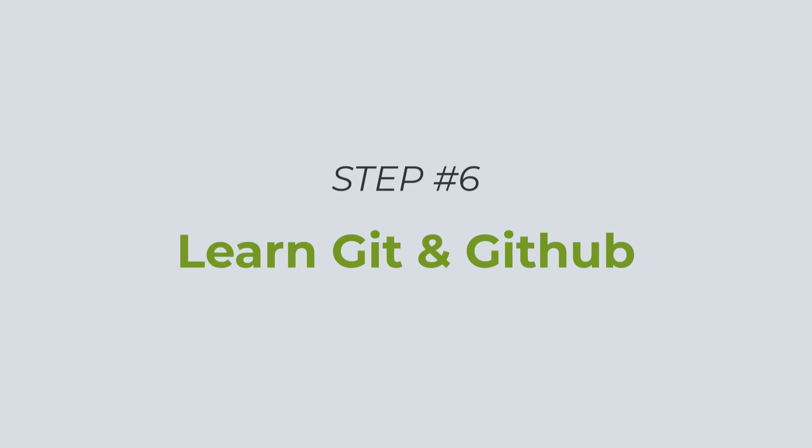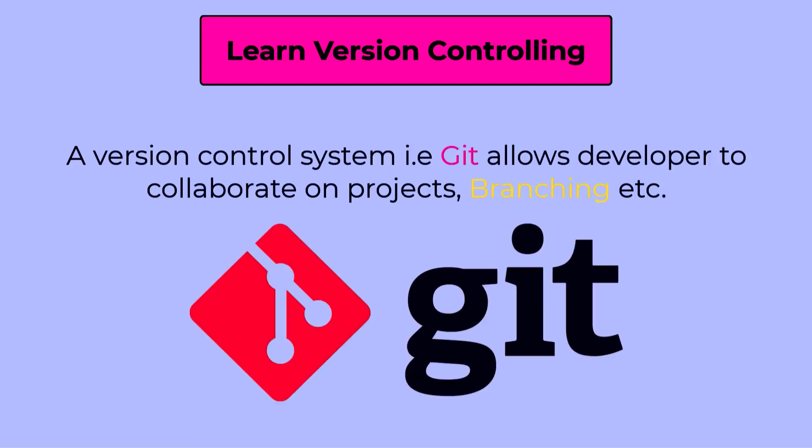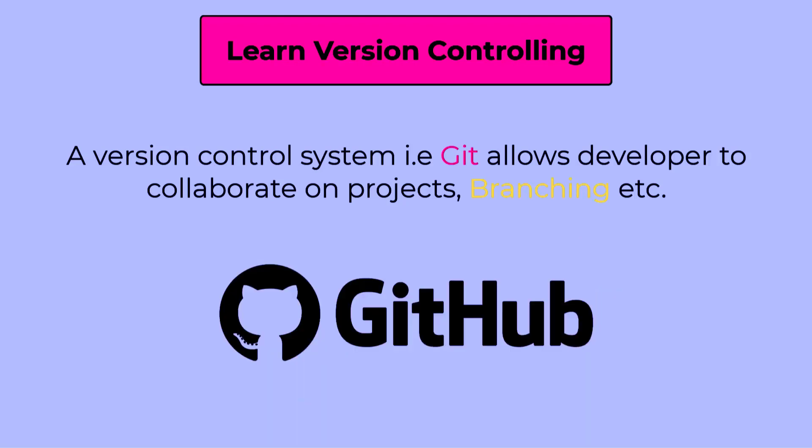Next, you should learn a little about Git and GitHub, which help you manage your code. A version control system is a tool that helps both frontend and backend developers collaborate and track changes made during programming. It increases project speed by allowing developers to interact, reducing errors, and recovering code if it is deleted. You should be familiar with basic Git commands and know at least how to upload your code to GitHub, clone repositories, and perform merges.